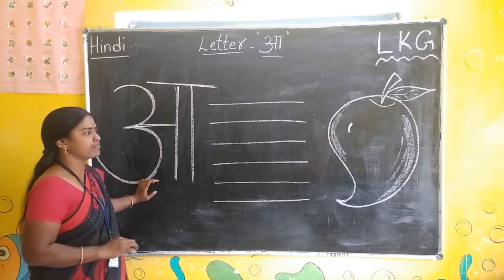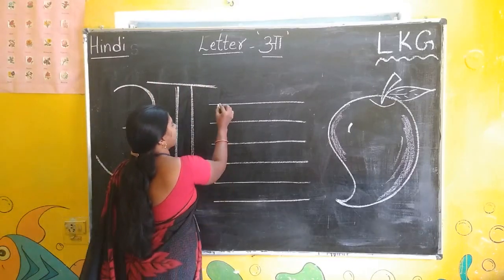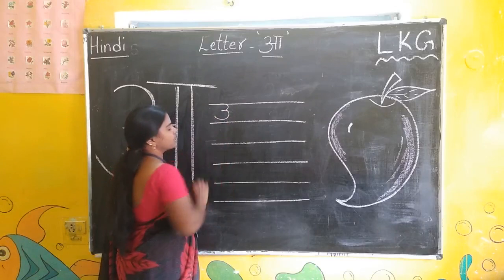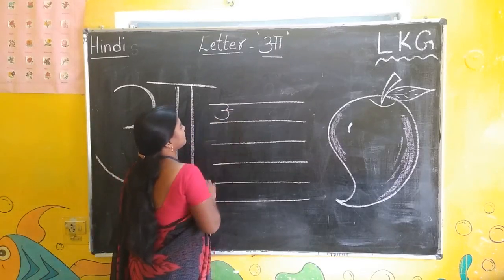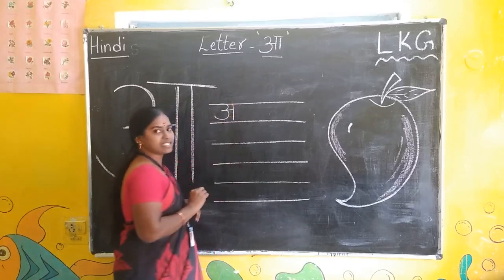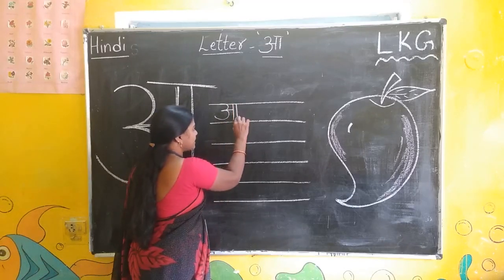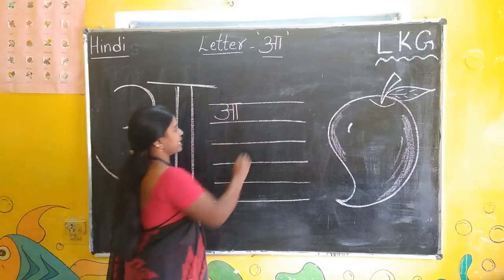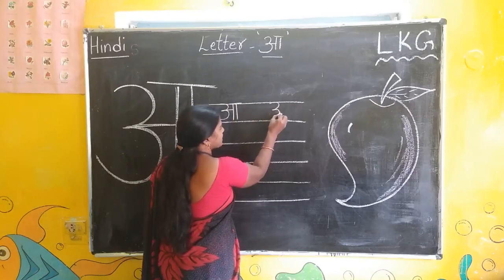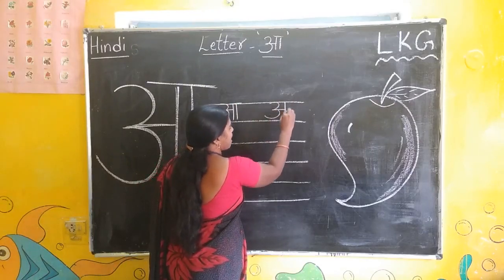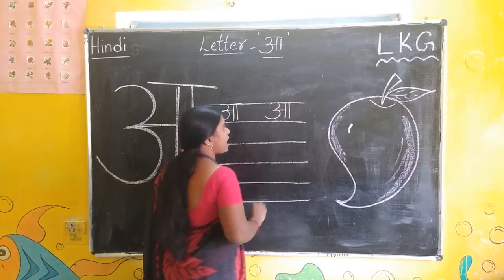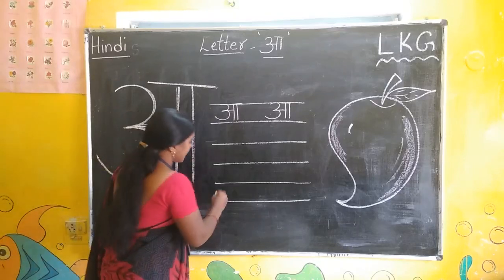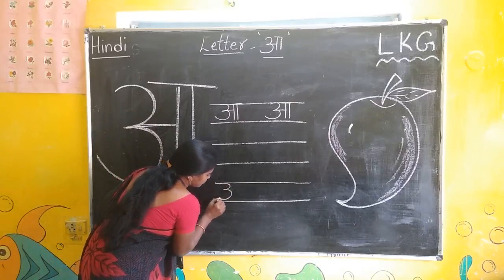A — say A. A means mango. In lines we will practice. One curve and one more curve, one sleeping line, one standing line, and again one more standing line. This is A. Say A. Write once again. A — say A. A means mango. Leave this line and write in this line. Say and write. You have to write neatly.